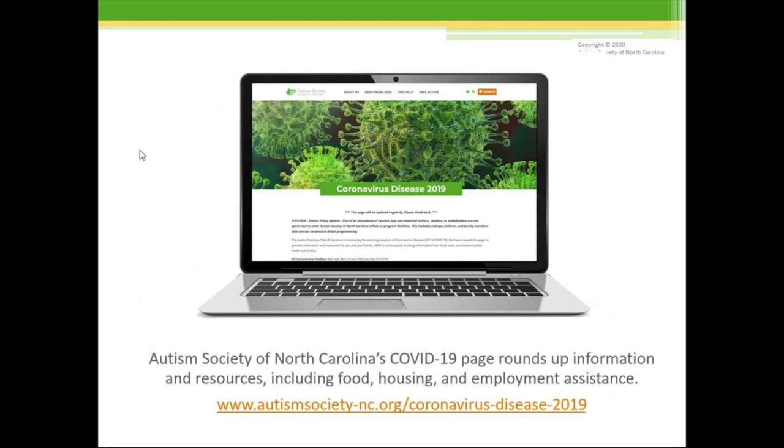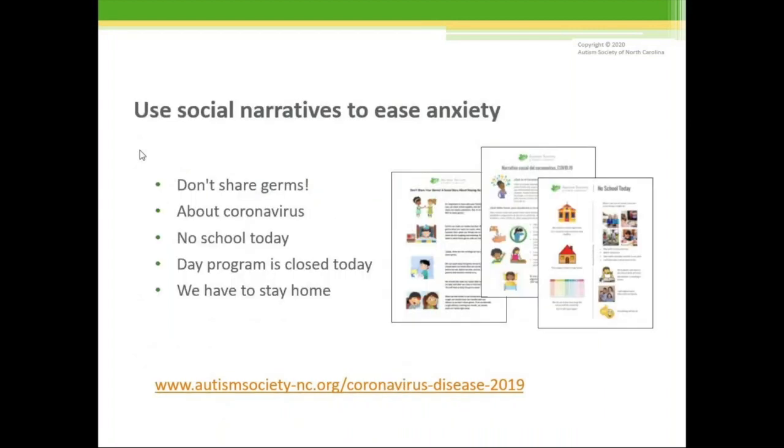And if you want more information during this tough time with COVID-19, the Autism Society of North Carolina, we have a COVID-19 page that rounds up information, resources. This can include food, housing, and employment assistance. We also have updates as needed, so you can look at that. On that website, we also have social narratives that might help ease anxiety. This can include don't share germs about coronavirus, no school today, day program is closed, and we have to stay home. So those might be good resources for you and your family.